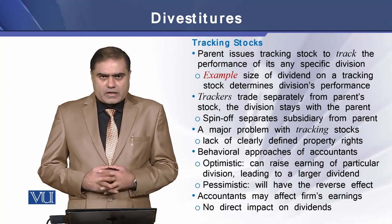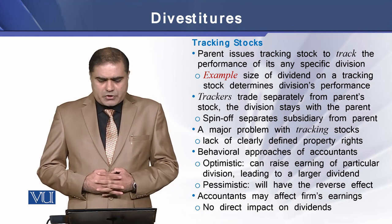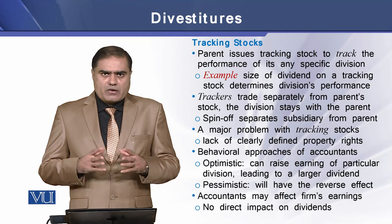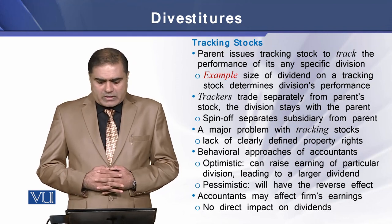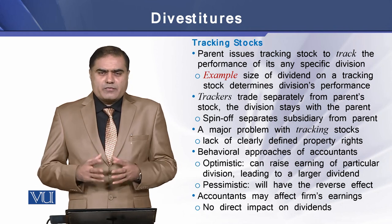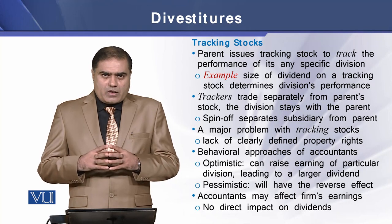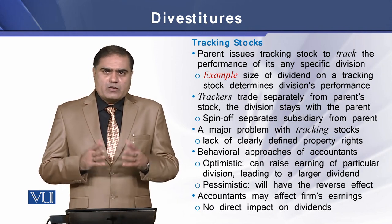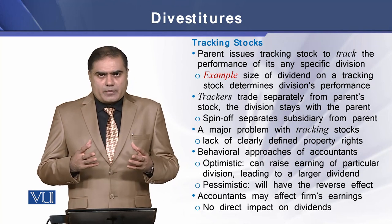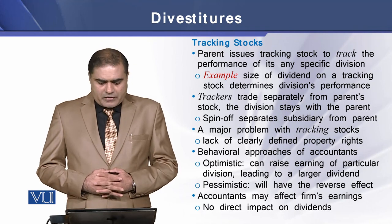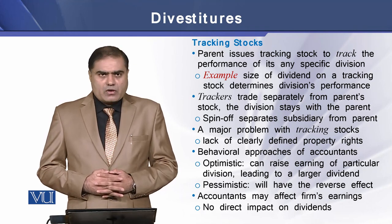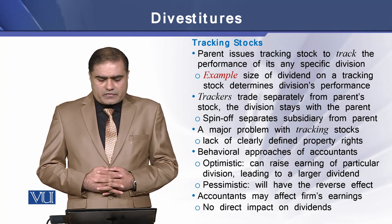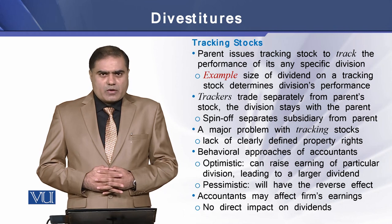Tracking stocks: another form of divestiture. In this case, a parent company issues tracking stock to track the performance of any of its specific divisions. For example, the size of dividend on a tracking stock determines a division's performance — if a division pays a higher amount of dividend, it means the division has earned a good amount of profit, showing better operating efficiency. Tracking stocks trade separately from the parent's stock, but the division stays with the parent company, whereas a spin-off separates the subsidiary from the parent company.